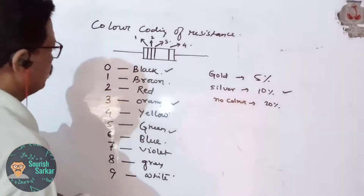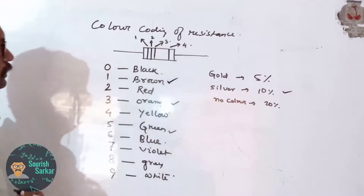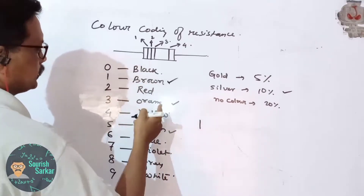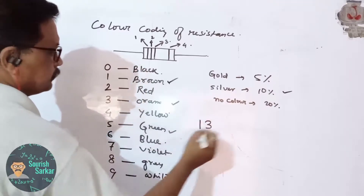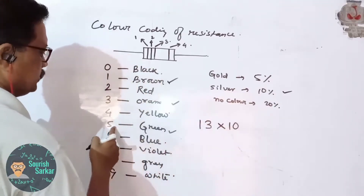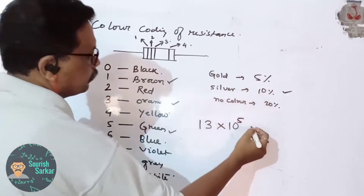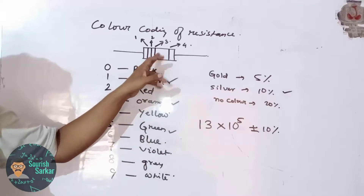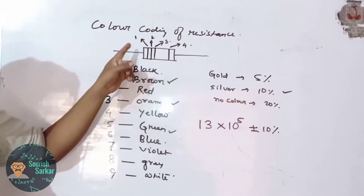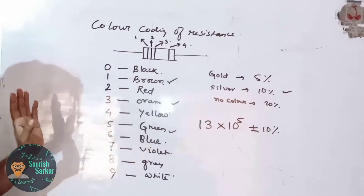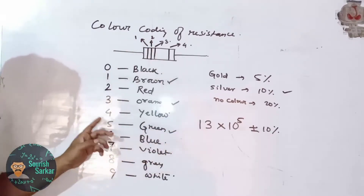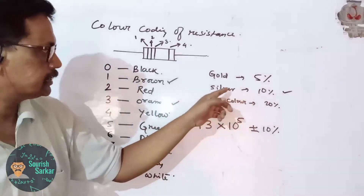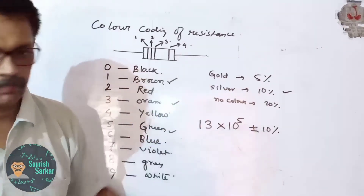For example, if the first ring is brown (1), the second is orange (3), and the third is green (power of 10 = 5), the resistance is 13 × 10⁵ ohms. If the fourth ring is silver, the tolerance is ±10%. So remember: the first ring gives the first significant figure, the second ring gives the second significant figure, the third ring gives the power of 10, and the fourth ring gives the tolerance.